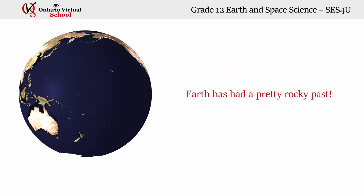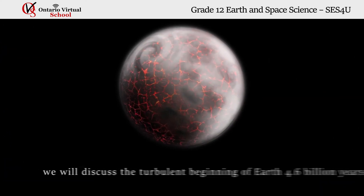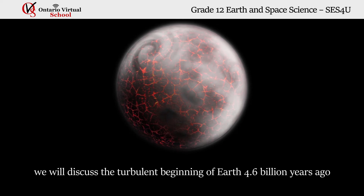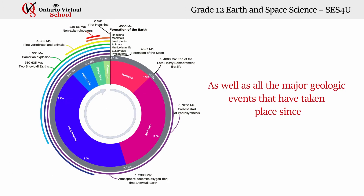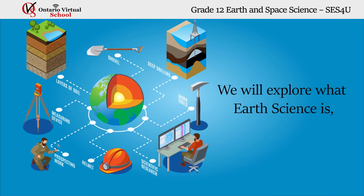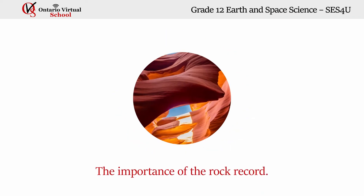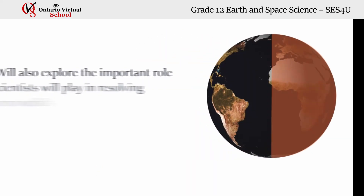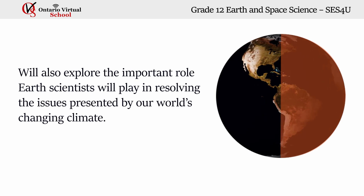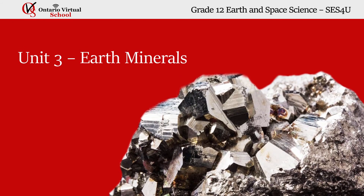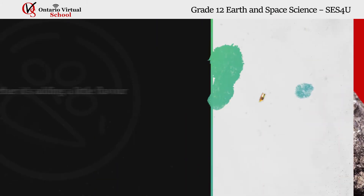Unit 2: Earth's Geological History. Earth has had a pretty rocky past. In this unit, we will discuss the turbulent beginnings of Earth 4.6 billion years ago, as well as all the major geologic events that have taken place since. We will explore what Earth science is, how Earth is a system, and the importance of the rock record. We will also explore the important role Earth scientists will play in resolving the issues presented by our world's changing climate.